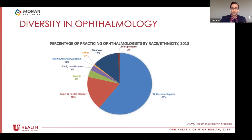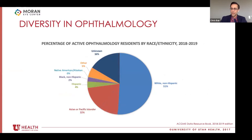This graph shows the racial breakdown of practicing ophthalmologists — underrepresented minorities make up only about 7% of practicing ophthalmologists. Similarly, the racial breakdown of ophthalmology residents shows similarly low rates in underrepresented minority groups. So what can we do to change this narrative? What can we do to improve diversity in ophthalmology here at Moran?